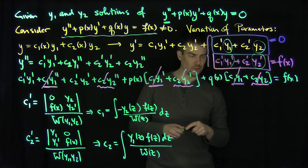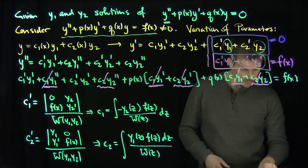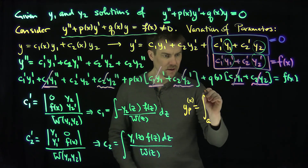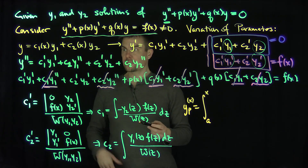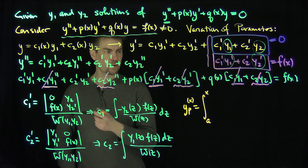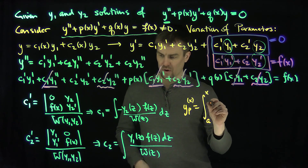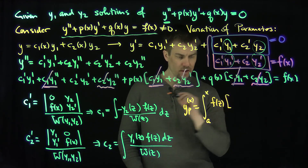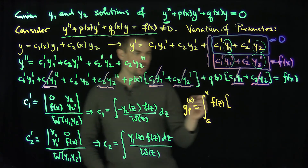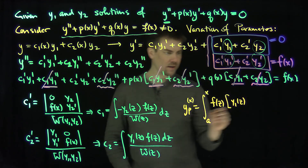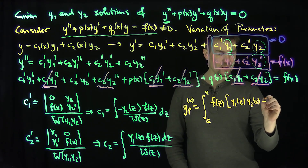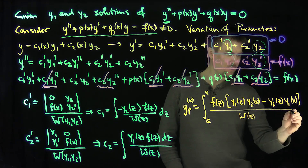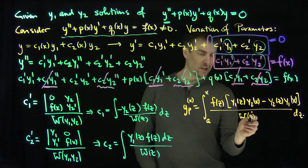Putting this together, the particular solution y_p is the integral from a to x of f of z times the quantity y1 of z times y2 of x minus y2 of z times y1 of x, all divided by the Wronskian of z, dz. So we found a particular solution using variation of parameters, with the Wronskian in the denominator.